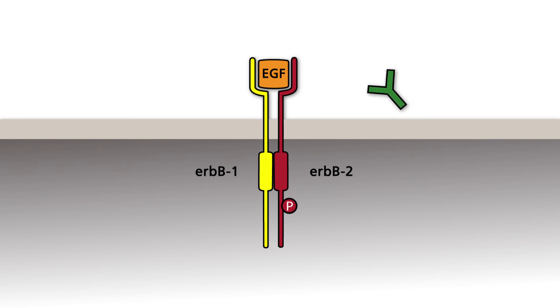Trastuzumab binds to an antigenic site within the extracellular domain of the receptor ERB-B2 and inhibits the activation of the receptor, independently of ligand binding and heterodimerization. Thus, in the presence of Trastuzumab, the receptor does not phosphorylate the intracellular tyrosine residues.